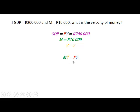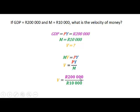Using the equation of exchange, MV equals PY, and therefore velocity is equal to PY divided by the money supply. We know that PY equals 200,000, so V equals 200,000 divided by 10,000. Therefore the velocity of money in this case is 20.